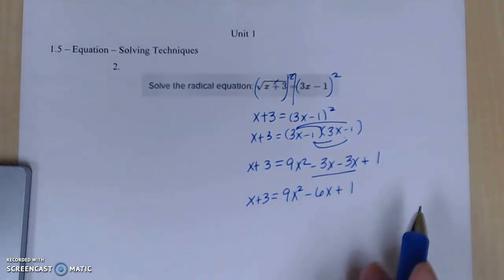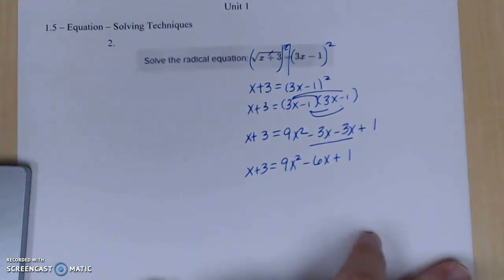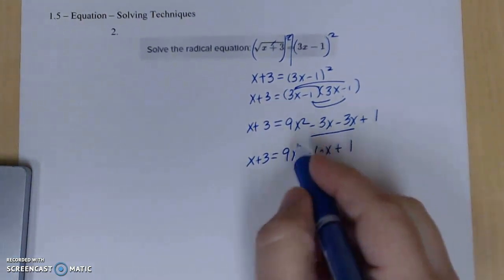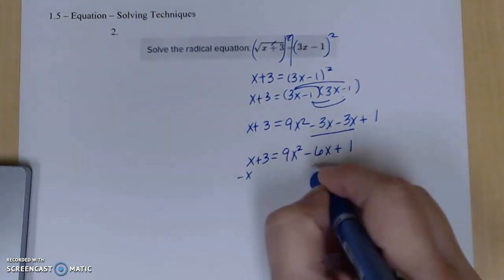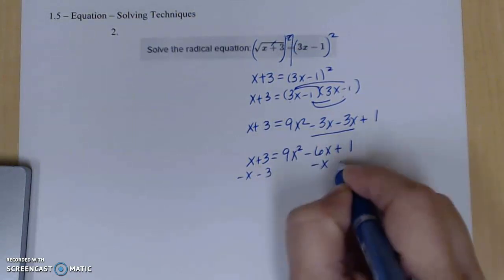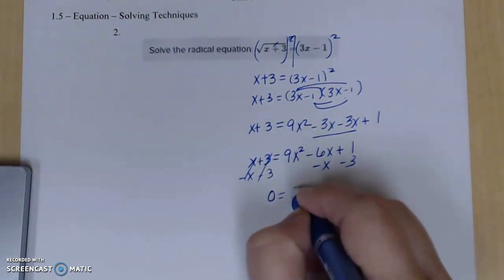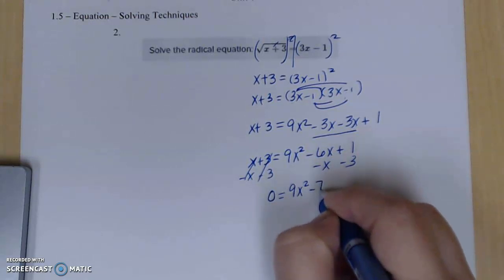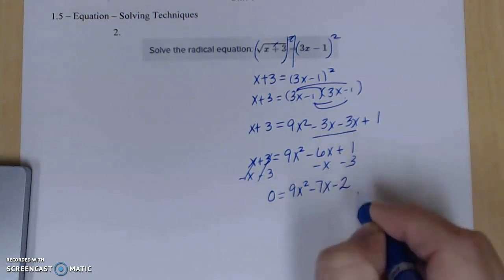You'll notice I'm now working with a quadratic. When you're working with a quadratic, you're going to move everything over to one side, say it equal to 0. So I'm going to subtract the x and I'm going to subtract the 3. So I get 0 equal to 9x² - 7x - 2.